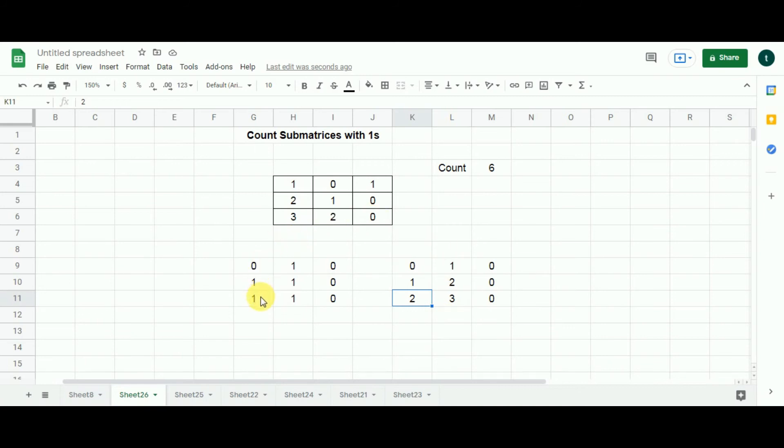So, number 1 is this matrix itself. Number 2 is this matrix. Number 3 is this matrix. And number 4 is this sub-matrix. As you can see, we have only 4 sub-matrices, not 5 sub-matrices emerging from here. Hence, this addition would have yielded a wrong result.